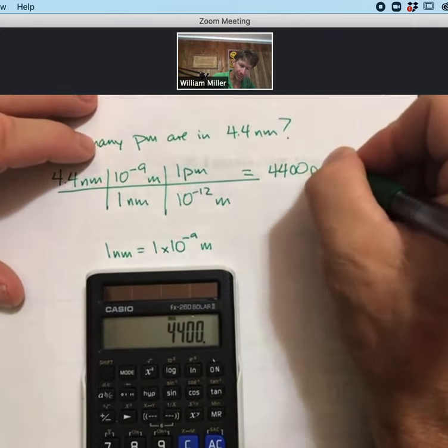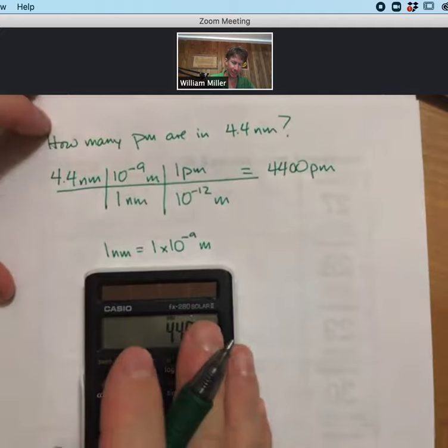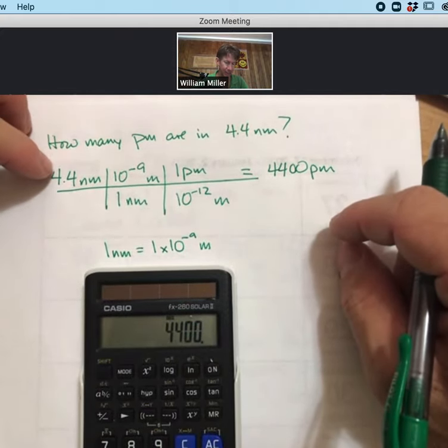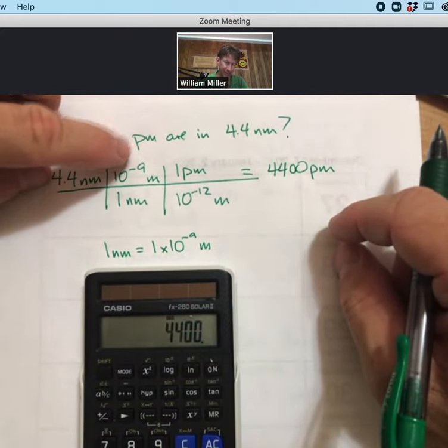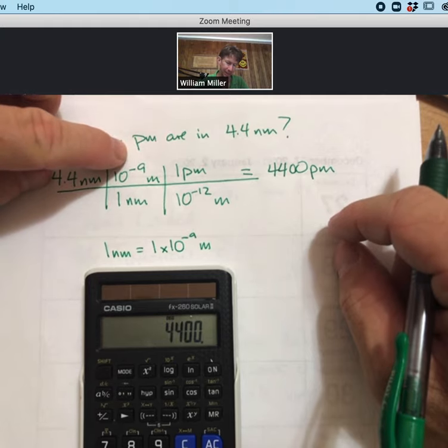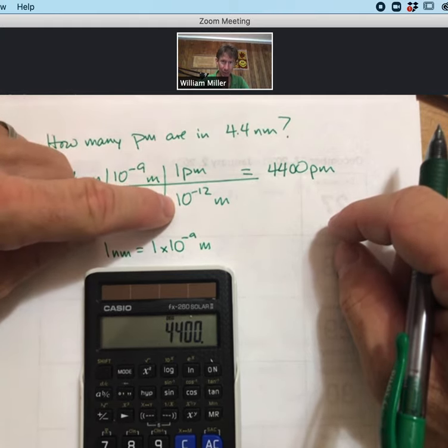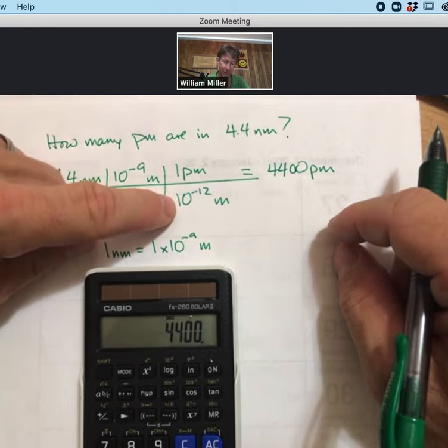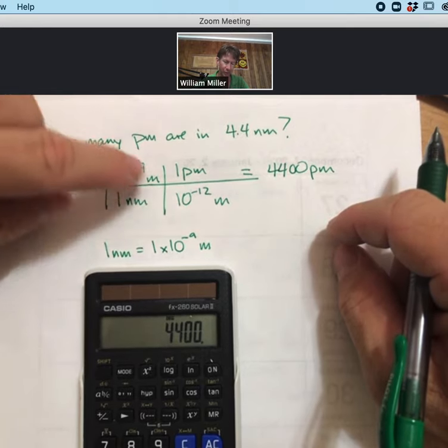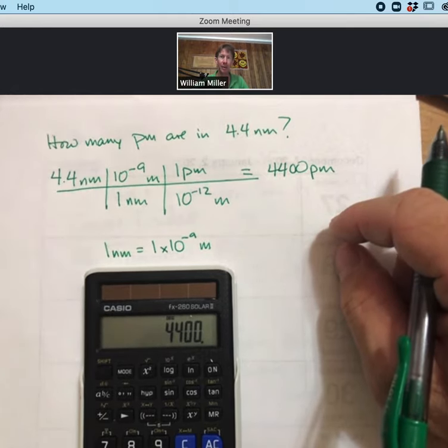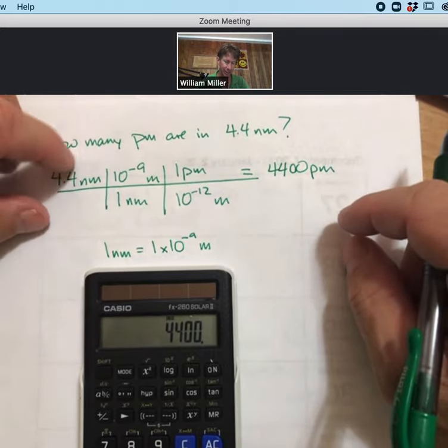My units are picometers. Now, just a thought process about this one. We can see that it's 10 to the minus 9 on the top, and it's 10 to the minus 12 on the bottom, which means divide by. And so overall, if we were to think from our math classes, how do we account for these two?